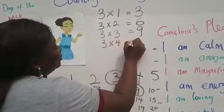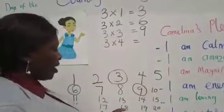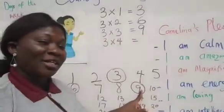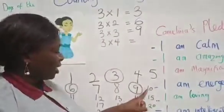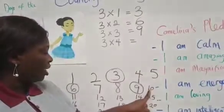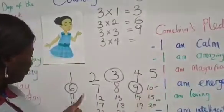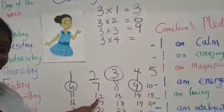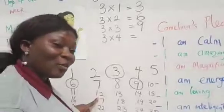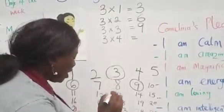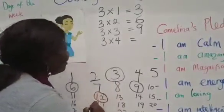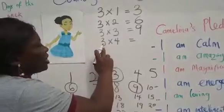Now we have three times four. We have nine here, so we count again three places. We count from ten: one, two, three — and our three ends at number twelve. So we circle twelve.